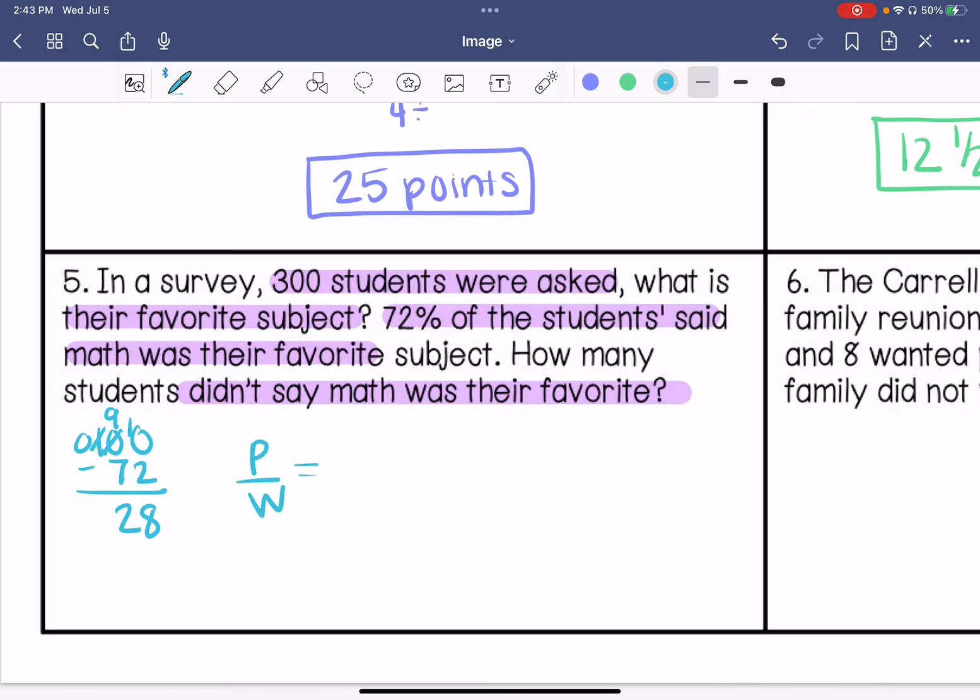So my whole is 300. We don't know our part. We know that 28% said it wasn't math. We are going to multiply by 3. So what's 28 times 3? So that is going to be 74 students.